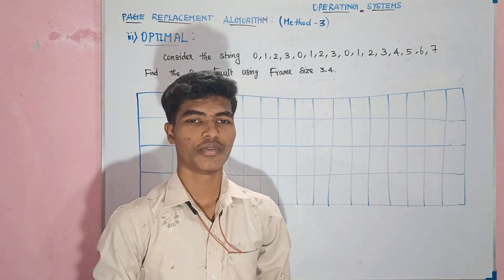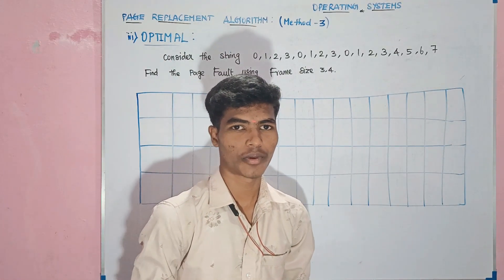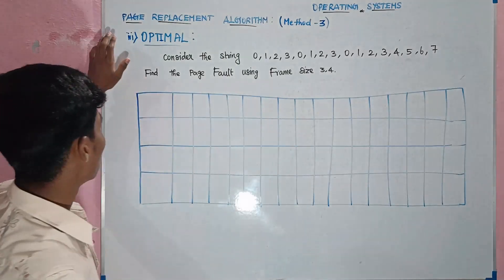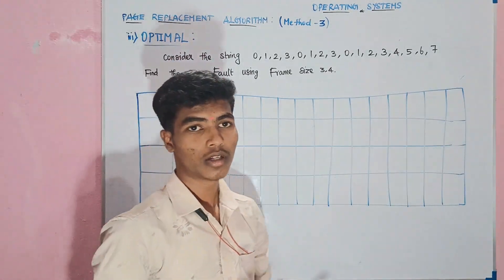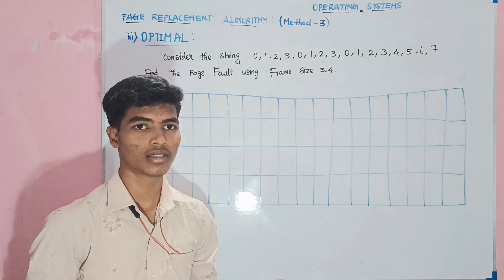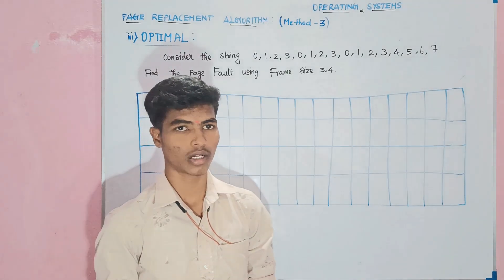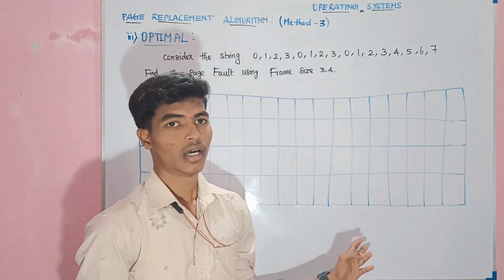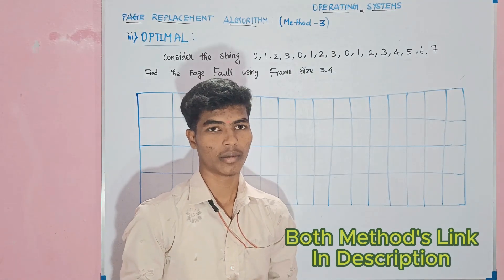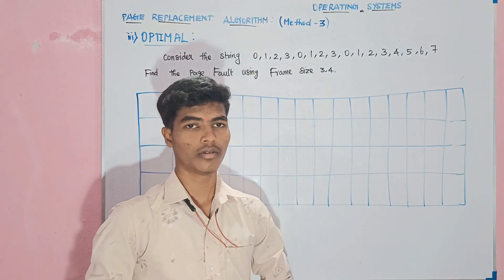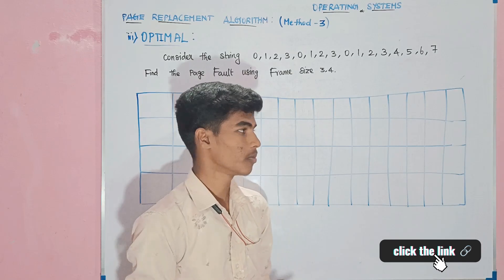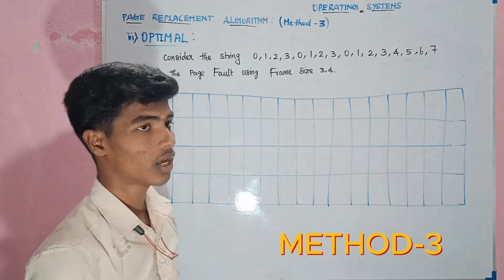Hello friends, welcome to VJ Solutions 2.0. Now we are going to talk about page replacement algorithm methods 1 and 2: method 1 is FIFO (First In First Out) and method 2 is LRU (Least Recently Used). We have the description and link to check. Now we are going to talk about the 3rd method.